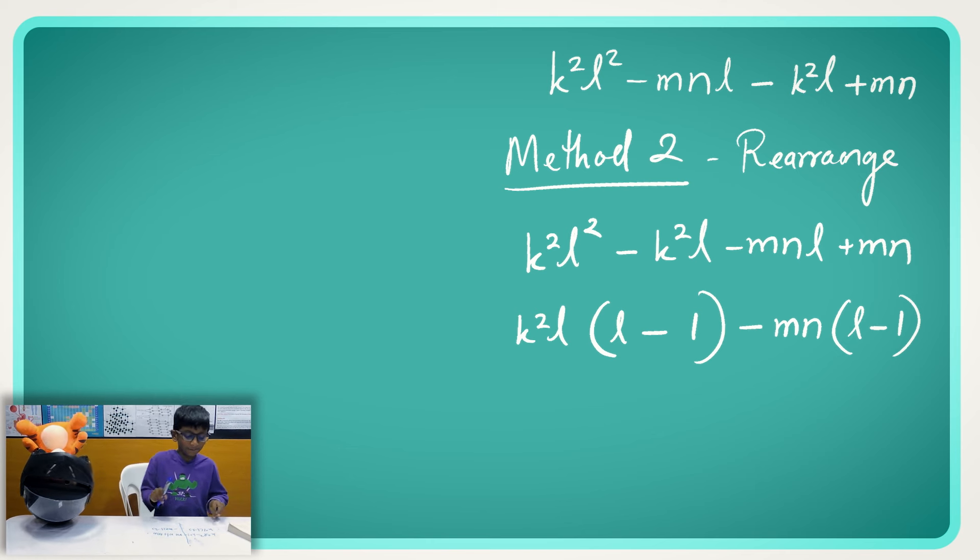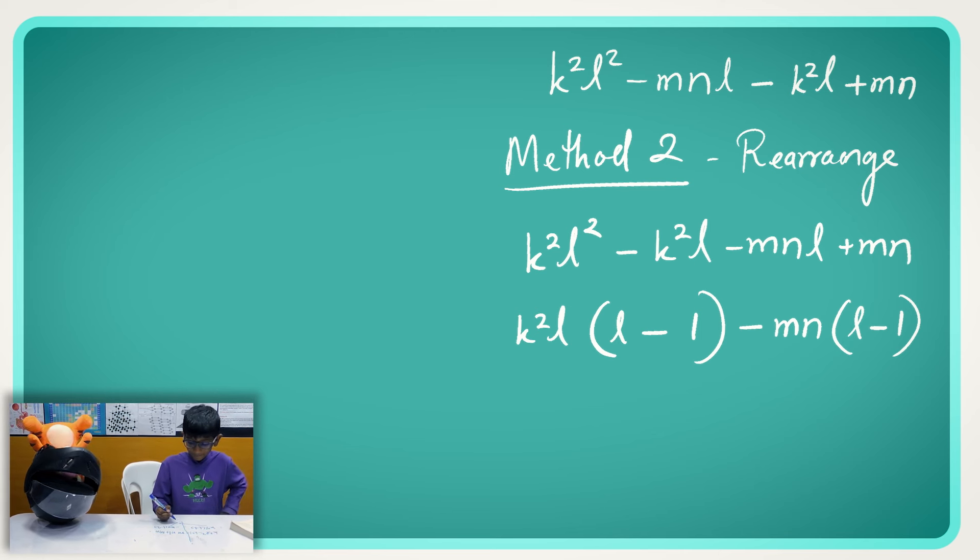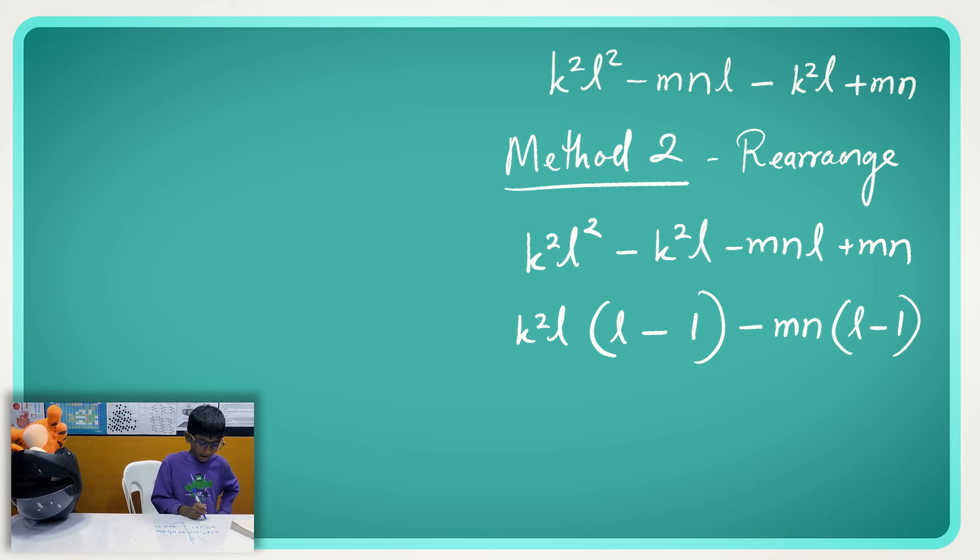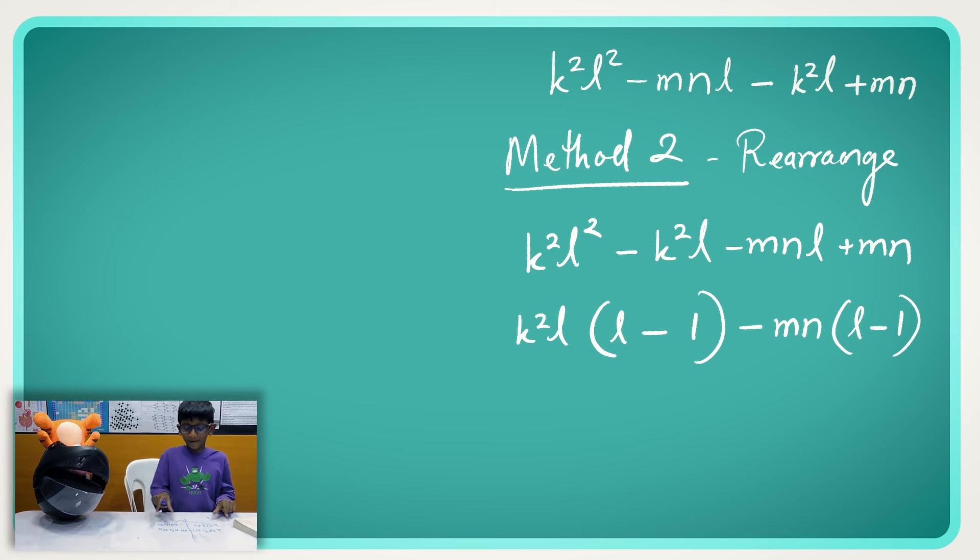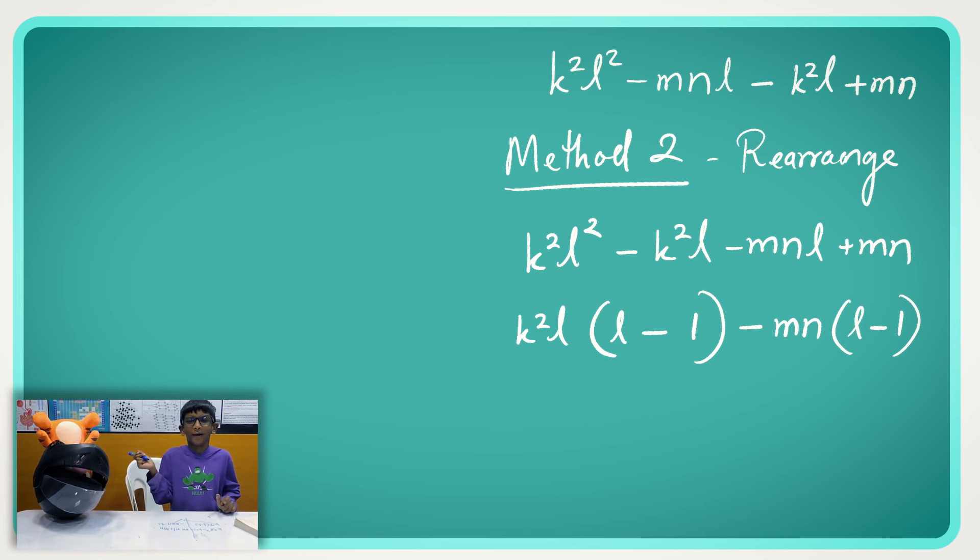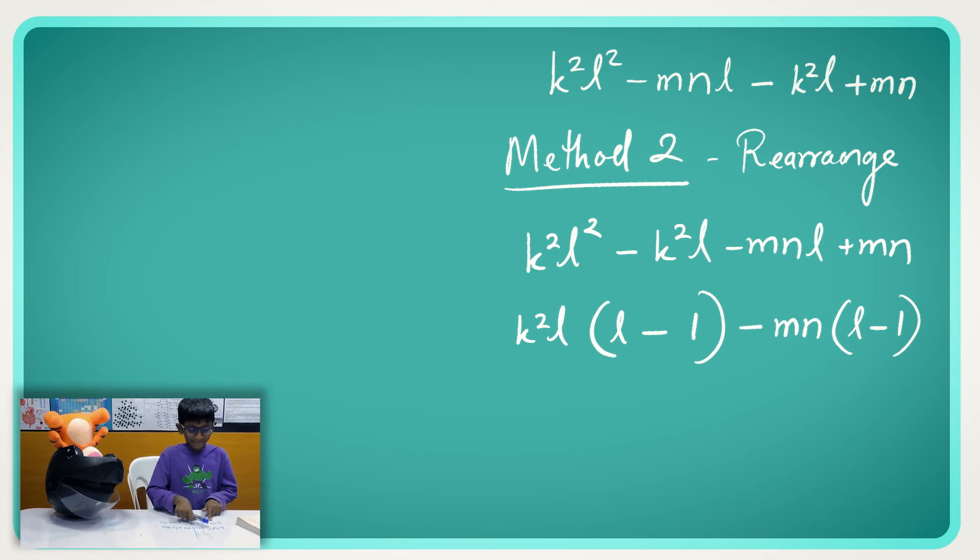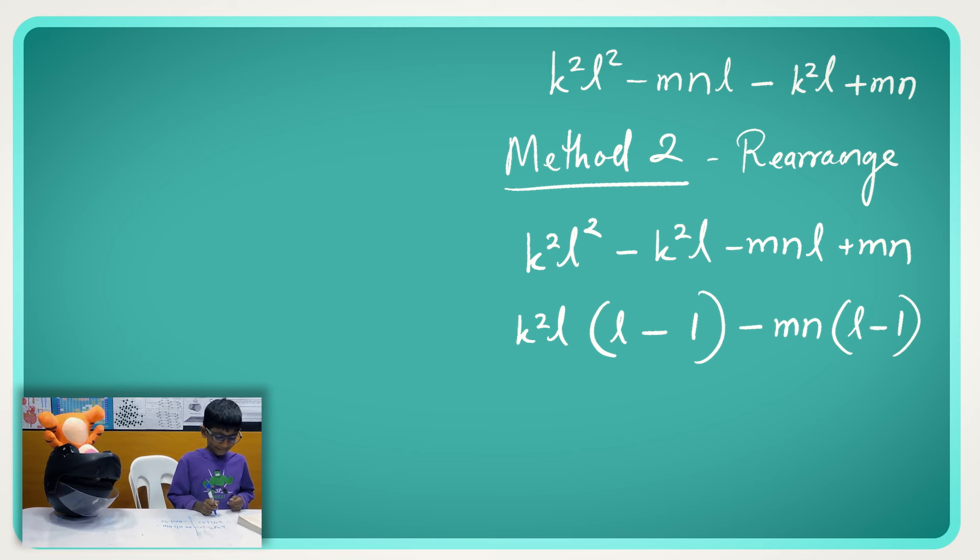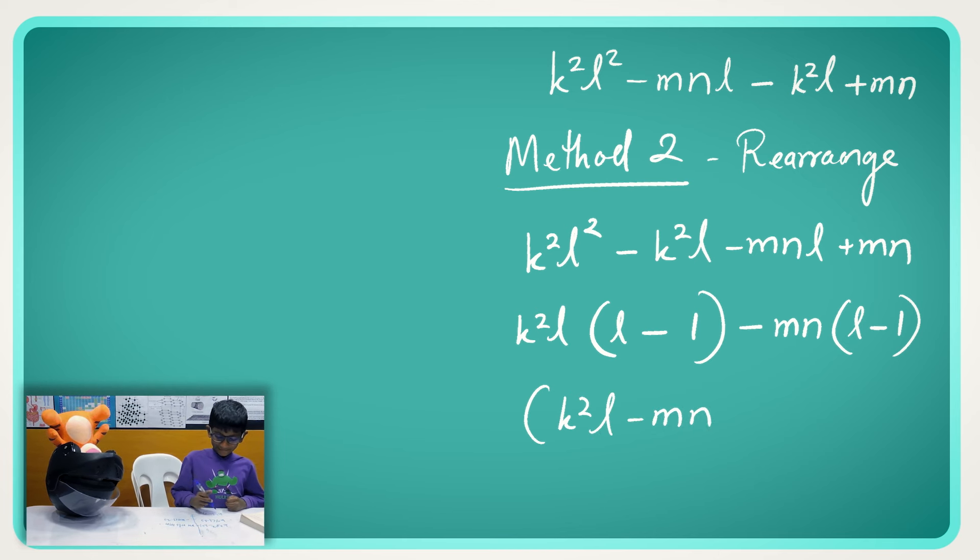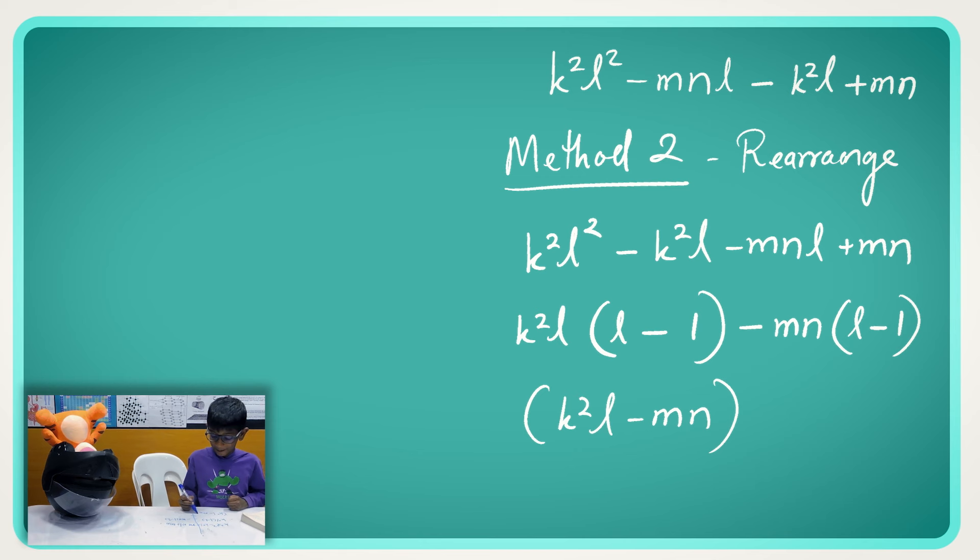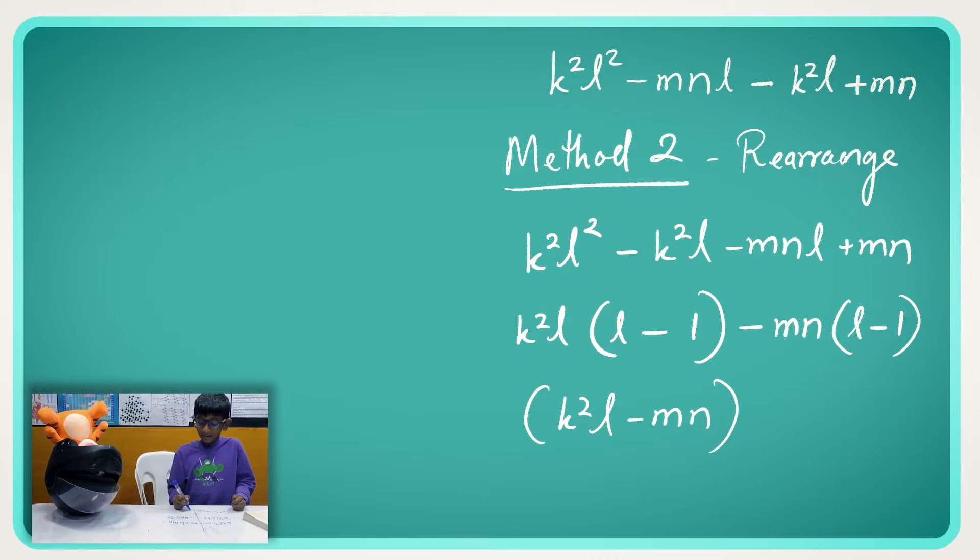And now we have both of these, and now we are going to put it together. Yeah, let's put it together. Okay, how to put together? Okay, let's put it. Imagine that one of them is a nail and just take a hammer and nail it into the other one. Okay, let's try to put it together. So I am going to take K square L minus MN, okay, bracket, and then the other bracket will have L minus one. And that's it.